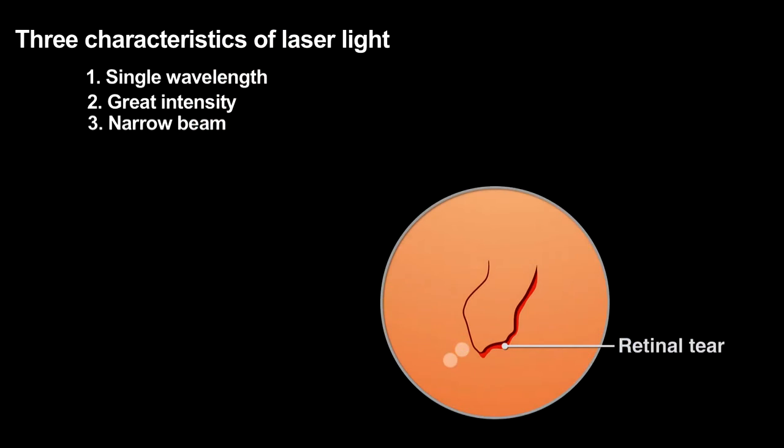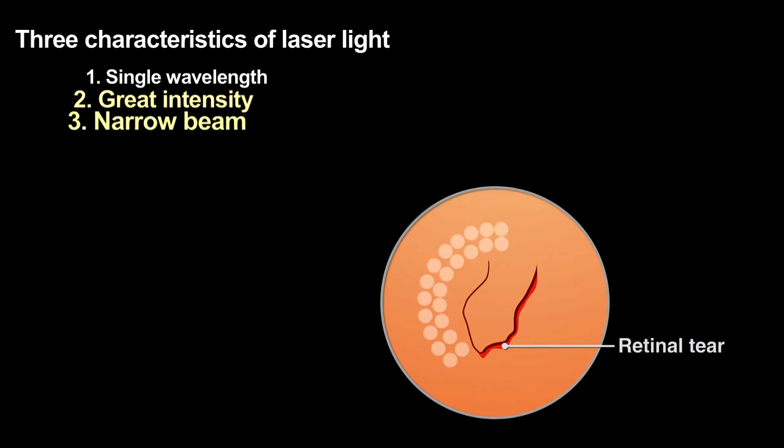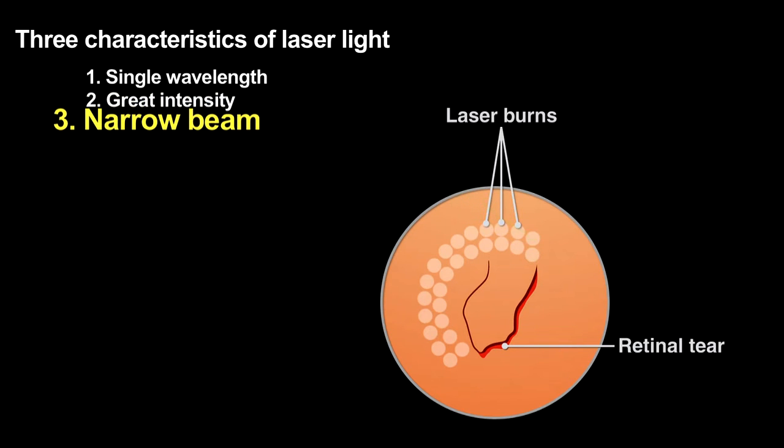Surgeons use green laser light of nearly a single wavelength because that color passes through the eye's lens and vitreous humor without being strongly absorbed, and thus without causing damage. The laser beam then strikes the retina where the tissue strongly absorbs that light, using the high-intensity light to weld the detached retina back into place. The beam's narrowness allows the surgeon to affect only the area of the retina that needs to be repaired, areas as small as 30 microns.